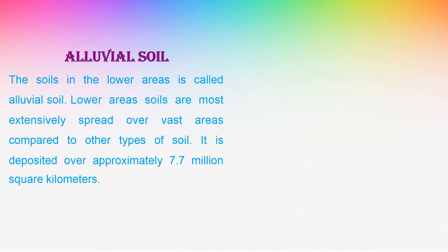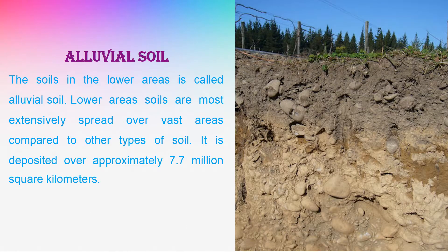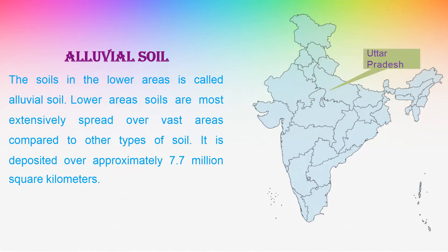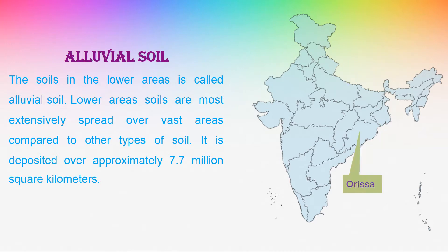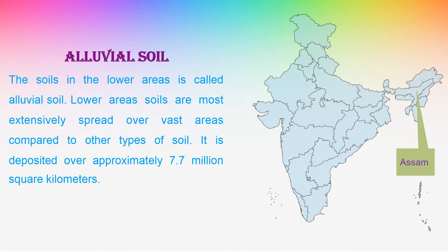Alluvial Soil: The soil in the lower areas is called Alluvial Soil. It is the most extensively spread type, covering approximately 7.7 million square kilometers. This type of soil is found in Uttar Pradesh, Bihar, West Bengal, Orissa, Punjab, Haryana, and the Brahmaputra Valley of Assam.